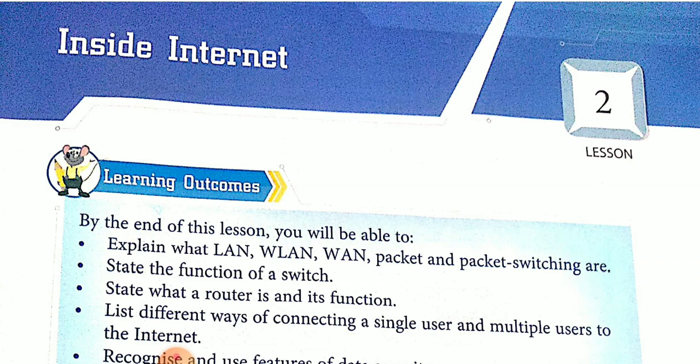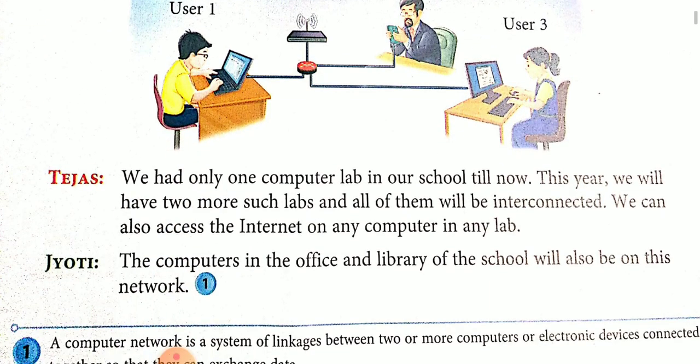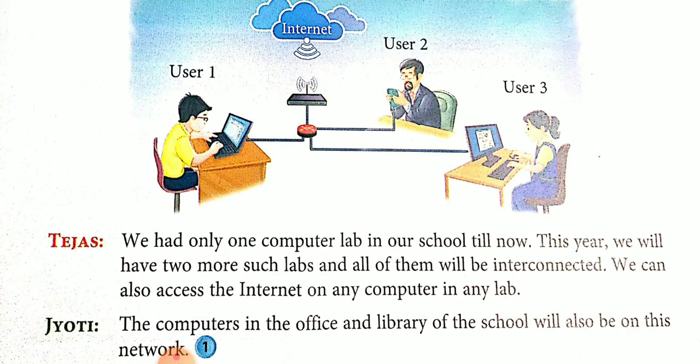The first word that comes here is Network. What is Network? In simple words, Network is the interconnection of different computers. We can also say Network is a group of computers connected with each other.